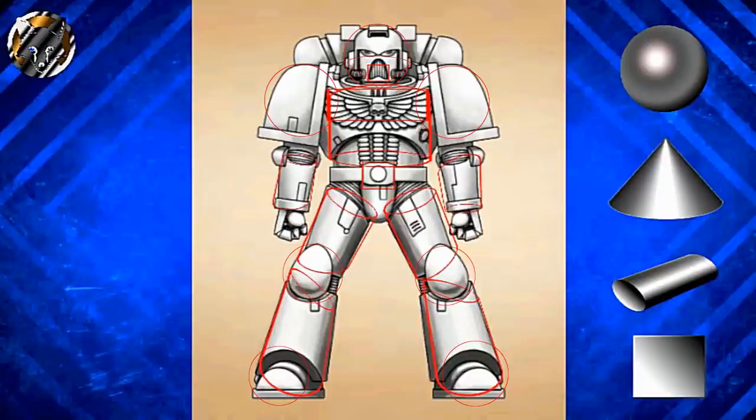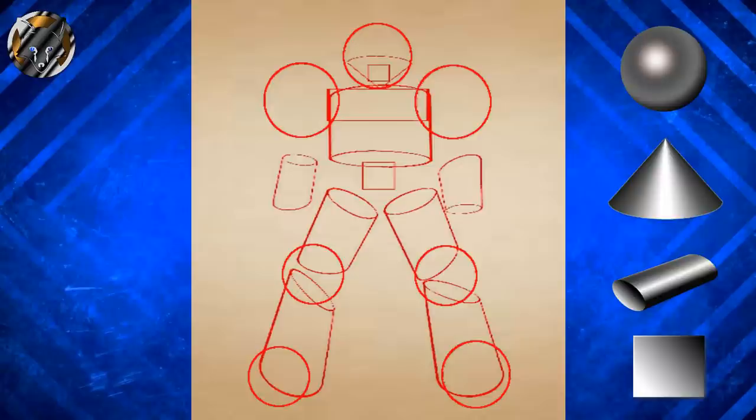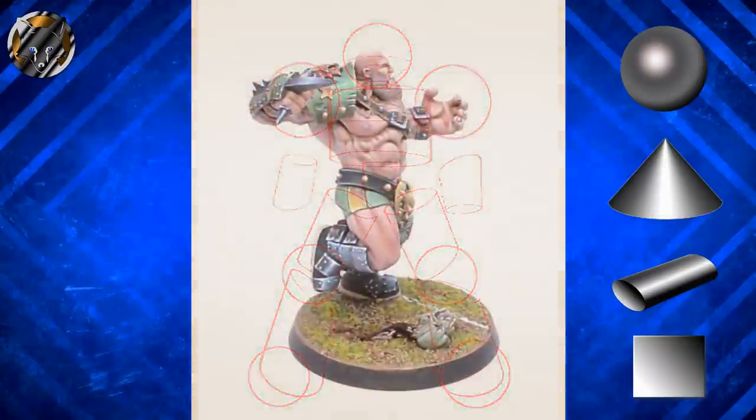When you're starting out with this, space marines are great to practice on, as each section is very simple to work out. So now that you have all the shapes in place, it's simply a matter of deciding where your light source is going to be, and then you'll be able to work out the position of the highlights by simply using the rules for highlighting those four basic shapes. Let's have a look at a couple of practical examples so you can see how this works on an actual model.